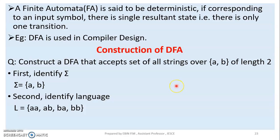A finite automata is said to be deterministic if, corresponding to an input symbol, there is a single resultant state — that is, there is only one transition. This is the definition of deterministic finite automata. The transition function must be well-defined: for each state and input symbol, exactly one next state is determined.